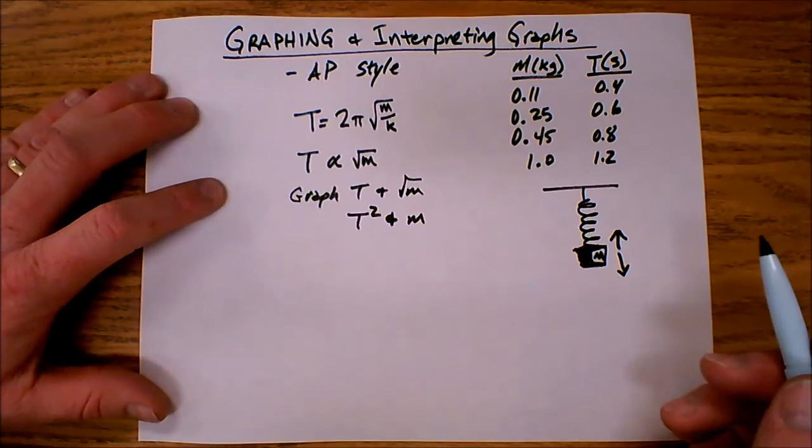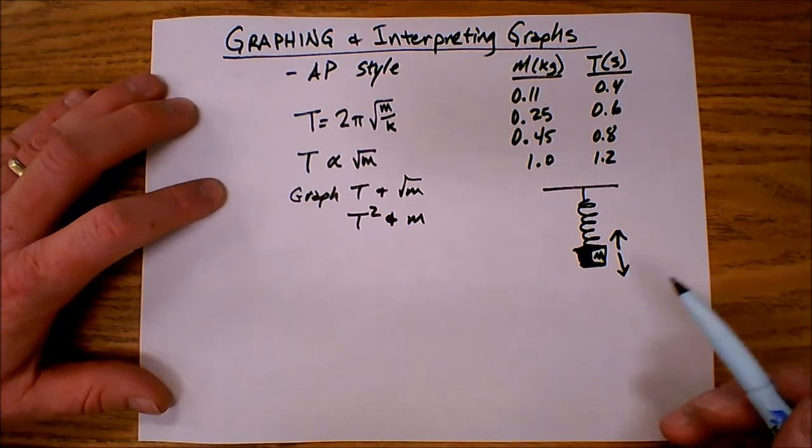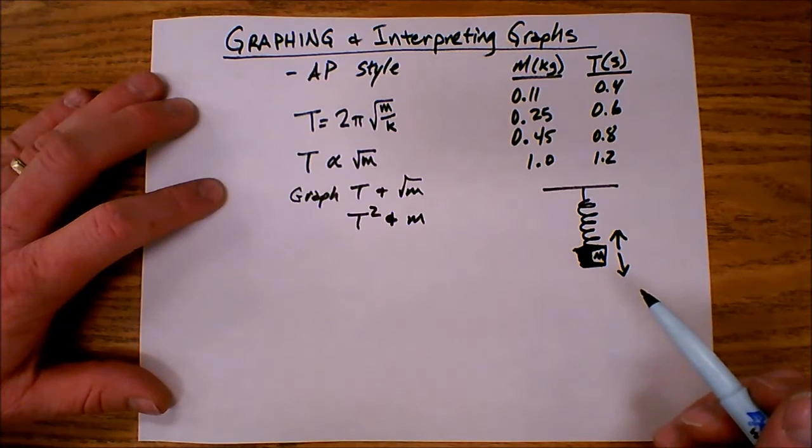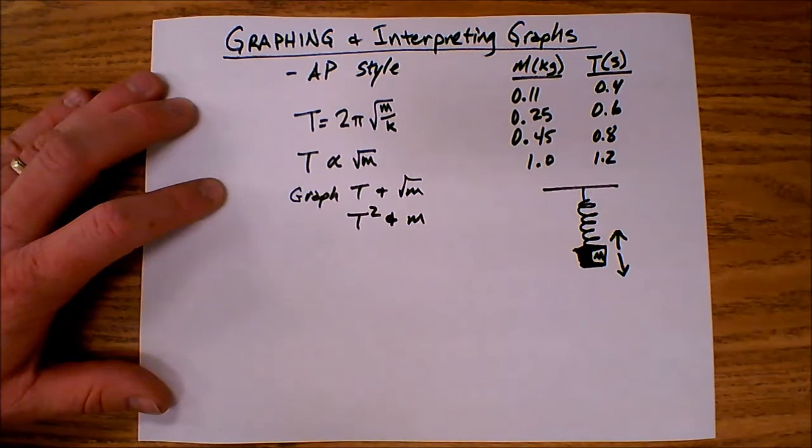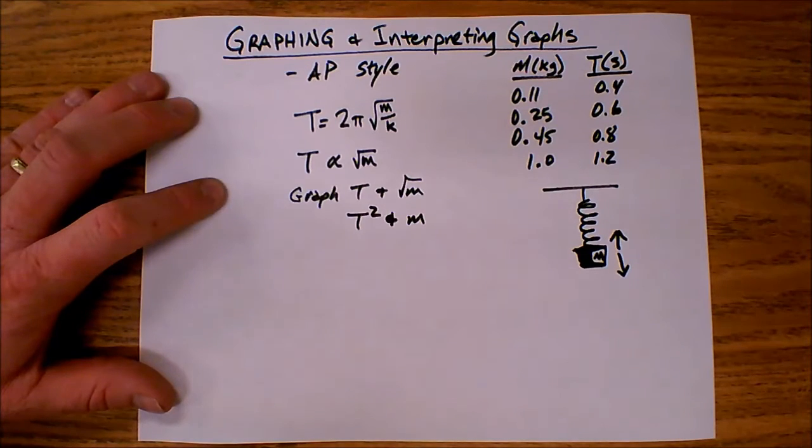So at this point, I can choose either one. Graph T and the square root of m or graph T squared and m. So let's go ahead and make a choice. I'm going to go ahead and graph T squared and m.